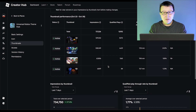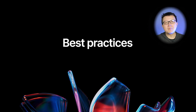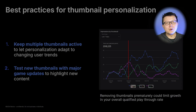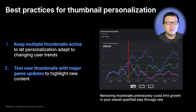Of course, if you do want to make changes, you can always go into Edit Active Thumbnails and pick which thumbnails you want to stay active for personalization. That's the live demo. Now let's walk through some best practices. Number one: keep multiple thumbnails active so that personalization can actually adapt to changing user trends and platform changes. When should you test new thumbnails? We think that when you make a new content update or have a big event coming, that's a great opportunity to test a new set of thumbnails and restart personalization.